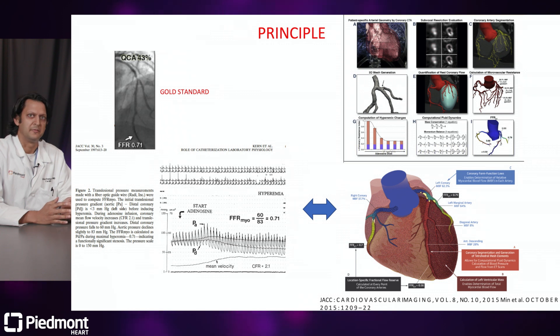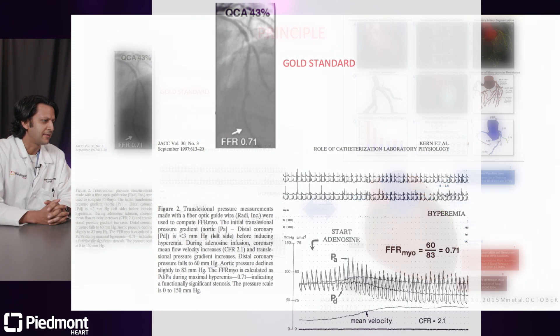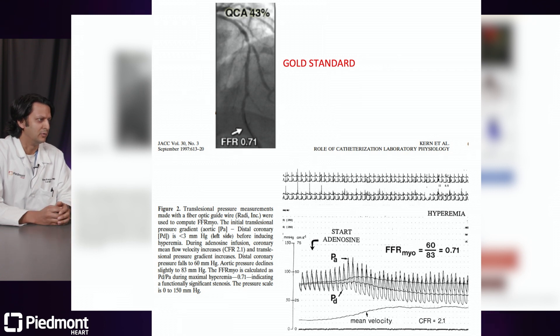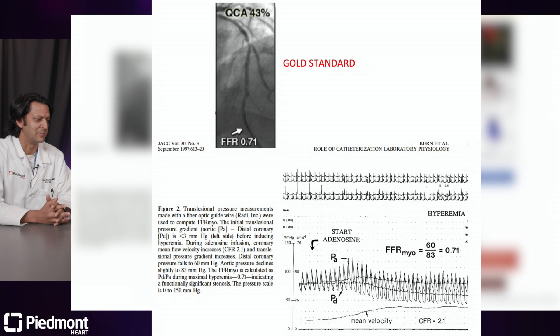Thank you, Dr. Polsani. The idea here is that we're trying to mimic what is done invasively in the cath lab to get a sense of how hemodynamically significant a lesion is, and do that in a non-invasive manner using CT. In the cath lab, we use a pressure wire that crosses a lesion, and the pressure difference across that lesion is measured. If the ratio of the pressure distal to the lesion compared to that in the aorta is less than 0.8, it's considered a hemodynamically significant lesion.